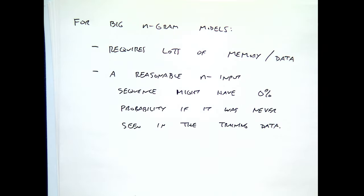For example, the sentence 'the kangaroo wore a yellow ___' may have never appeared in any training context. If you're using a six-gram model and start with 'kangaroo was wearing a,' you have a big problem predicting the next word because that five-word combination doesn't occur anywhere. You could do better by cutting down to considering one, two, three, four, or five n-grams — but that's still a pretty kludgy way to do it.